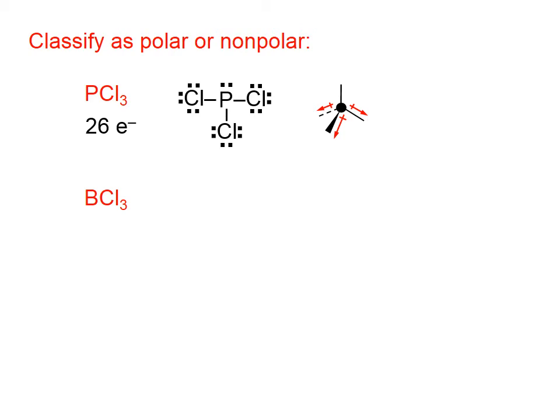So what we have is a down and to the right, a down and to the front and to the left, and a down and to the back and to the left. The net effect is that we're going down, which means that's a polar molecule.